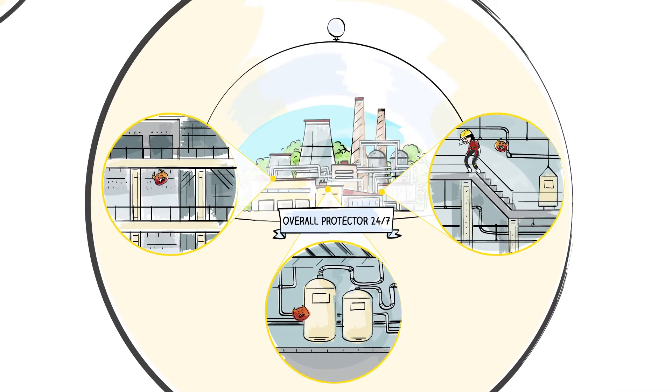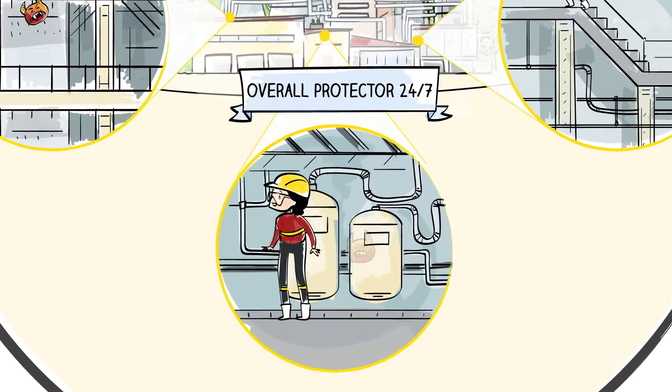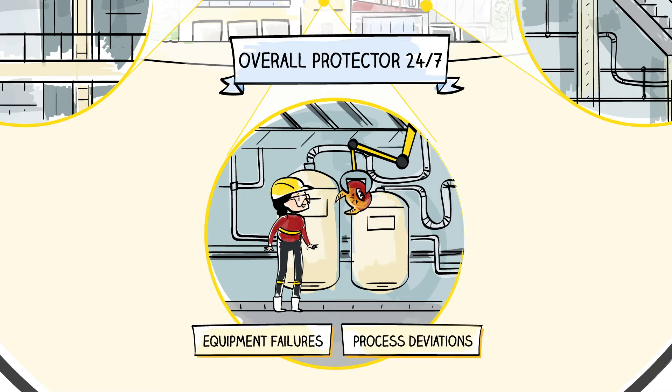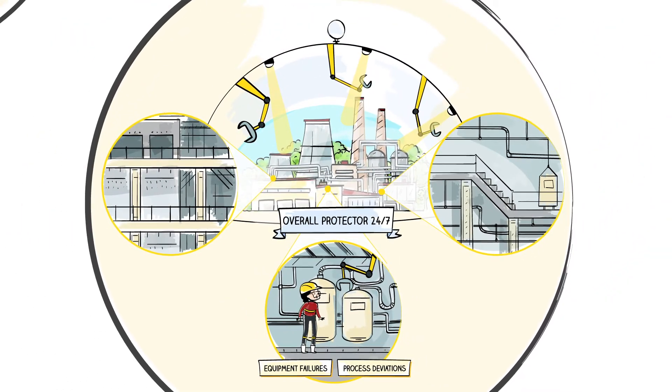Fortunately, SamGuard monitors the entire plant, making it possible to detect and prevent developing problems that humans would otherwise miss. It alerts Alex of anything from static, rotating equipment failures to process deviations. So whatever the problems are, she can handle them at an early stage, before it gets out of hand.